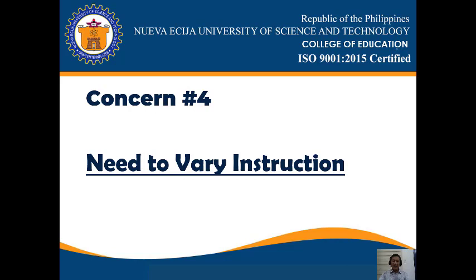Concern number four: the need to vary instruction. Social studies teachers may find it easier to stick to one method of instruction. For example, they may generally present information through lectures because it can be difficult to cover the material without relying on direct instruction. By contrast, some teachers may go to the other extreme with mainly projects and role-playing experiences. The key is to balance activities and find a way to use different teaching methods to present the material.